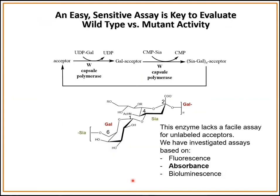Once we have our CMP sialic acid and perform our photocrosslinking experiments, we want to do mutations. What's needed for this enzyme is an easy, sensitive assay to evaluate wild-type activity versus mutant activity. This enzyme lacks an easy assay to investigate activity with unlabeled acceptors. Chai Chen's lab at UCSD has done some elegant work using chromophore-labeled acceptors with this serogroup W enzyme.